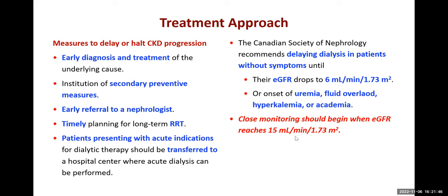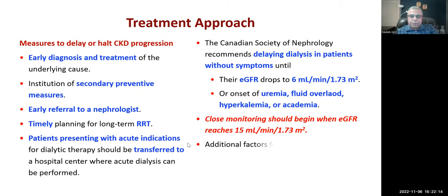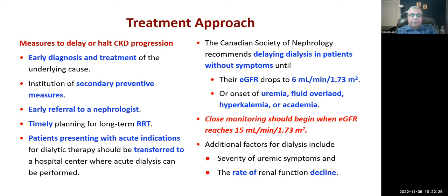Close monitoring should begin when estimated GFR reaches 15 ml/min. At this point, preparation for dialysis can begin — including creating an arteriovenous fistula. Additional risk factors indicating need for dialysis include uremic symptoms and a rapidly declining rate of renal function. If GFR is falling rapidly on serial measurements, dialysis must be planned.